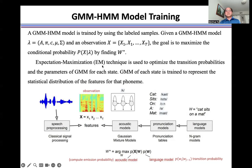Expectation maximization technique is used to optimize the transition probabilities and the parameters of GMM for each state. GMM of each state is trained to represent the statistical distribution for the features for that phoneme.